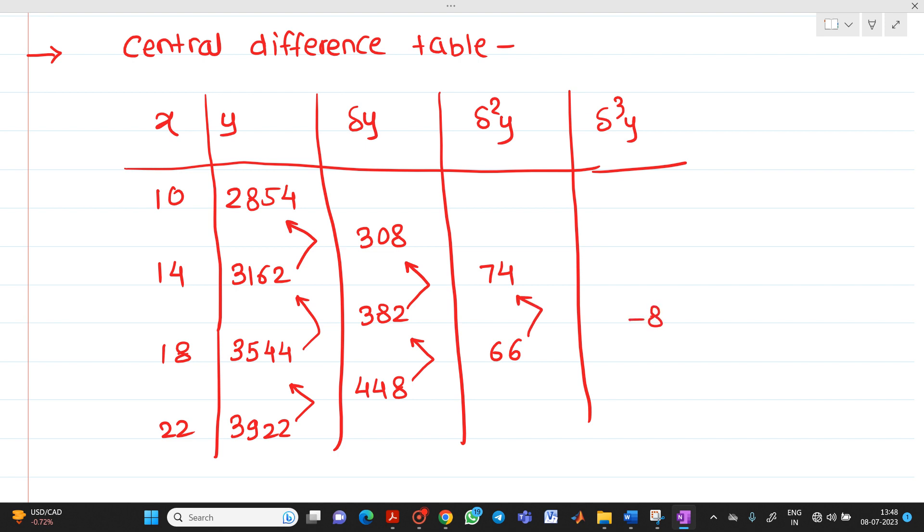And after that, if you see del raised to cube y, so this will be 66 minus 74, so you will get this answer as minus 8. So now we are talking about Bessel. So in the Bessel, how to take this? This will be your x0, this will be your x1. So you have to take it like this.